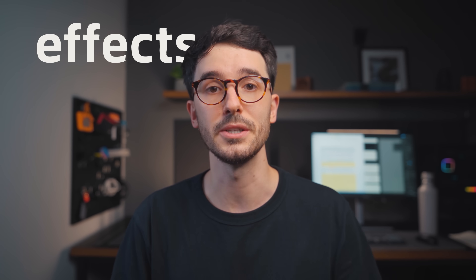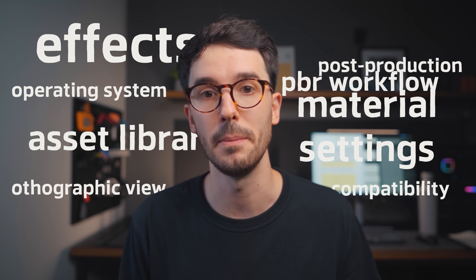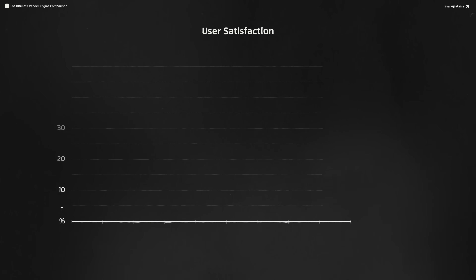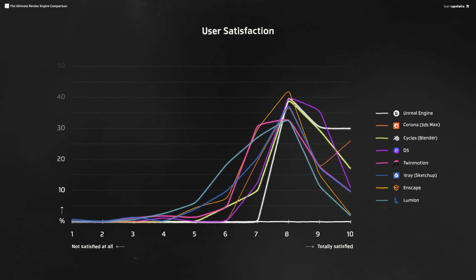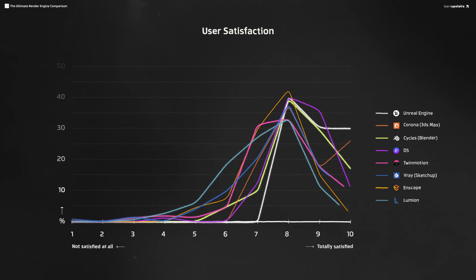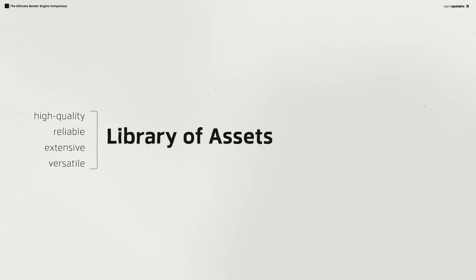Now back to data and specs. Let's take a look at the features. There are a ton of things we could cover here — effects, material settings, asset library, post-production capabilities, and so on. Overall, the survey shows that users are mostly satisfied with their current render engine of choice, averaging at around 8 out of 10. We all know there's no perfect engine that has every feature for everyone. A good library of assets is one of the features that can not only save you a massive amount of time when visualizing a project, but also help you achieve high-quality results.